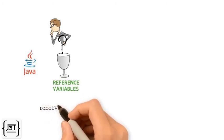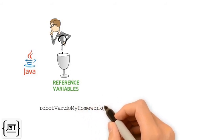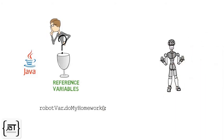Now, using the object reference variable, RobotVar, we can call the method DoMyHomework by using the dot operator, like this. We can think of the reference variable as a remote control to the object. We use it to get the object to do something.